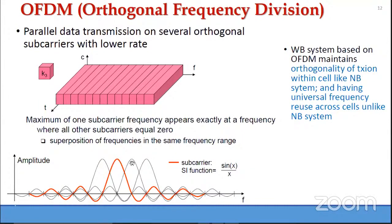All sub-carriers are contributing zero at the point when this particular sub-carrier is at its maximum. So each sub-carrier is a SINC function, and therefore we have orthogonal sub-carriers.